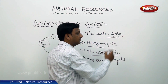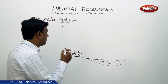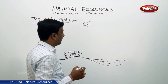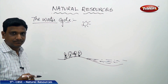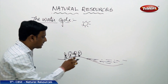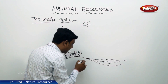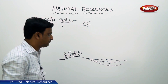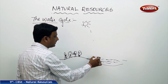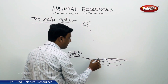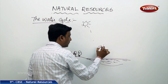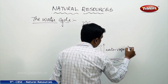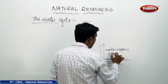Let us begin with the water cycle. The sunlight — the heat of the sun — makes the water present on the surface of the earth and even under the surface evaporate. Because of sunlight, the water in the water bodies gets heated up and goes up in the form of water vapour. This is called evaporation.